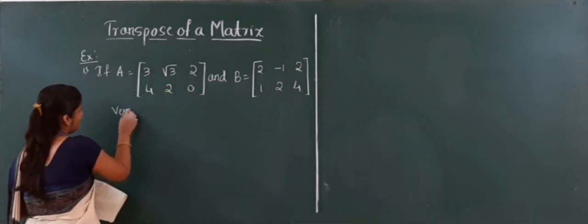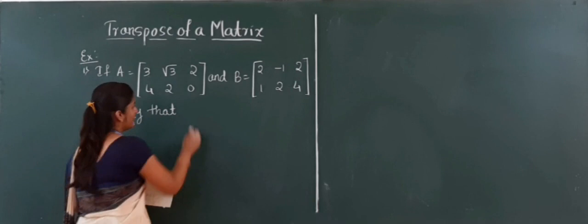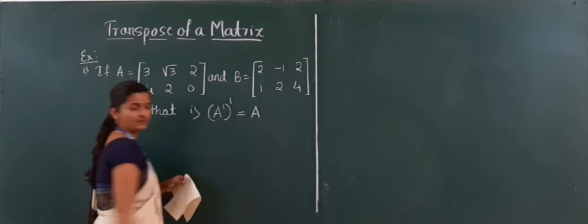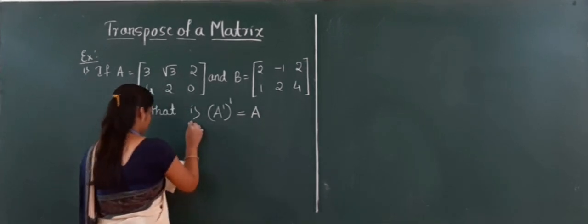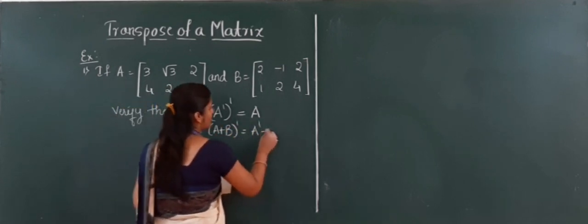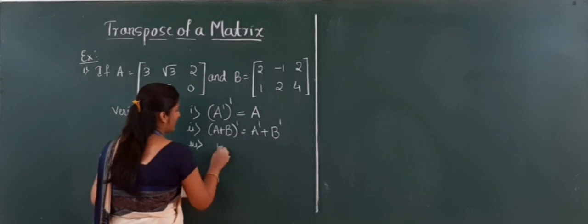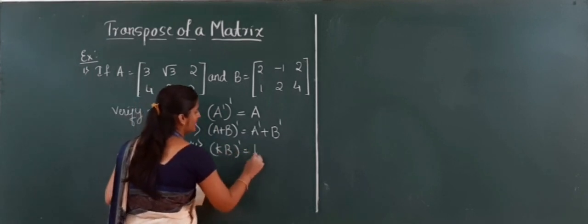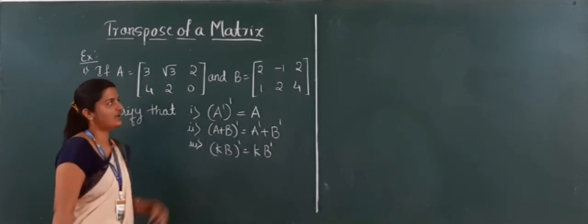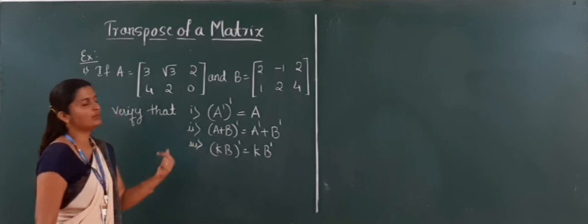We have to verify three things: first, (A')' = A; second, (A + B)' = A' + B'; and third, (kB)' = k into B'. These are all properties of transpose that we have already stated, and we must verify whether these properties hold good.